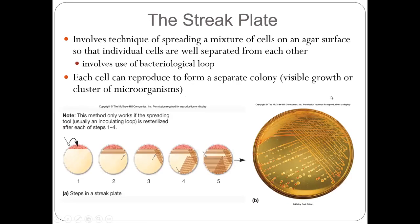For streak plating: you get a bacterial solution, use a loop — flame it first — then do a very intensive streak at the beginning. Then do a less intensive second quadrant, even less intensive for the third quadrant, and then the fourth and fifth. Most of the time we only do four quadrants. After the plates are incubated at 37 degrees Celsius for 24 hours, you will see colonies there. Those colonies are a group of cells representing a single bacterial species. So one individual colony — we say it's a pure culture.